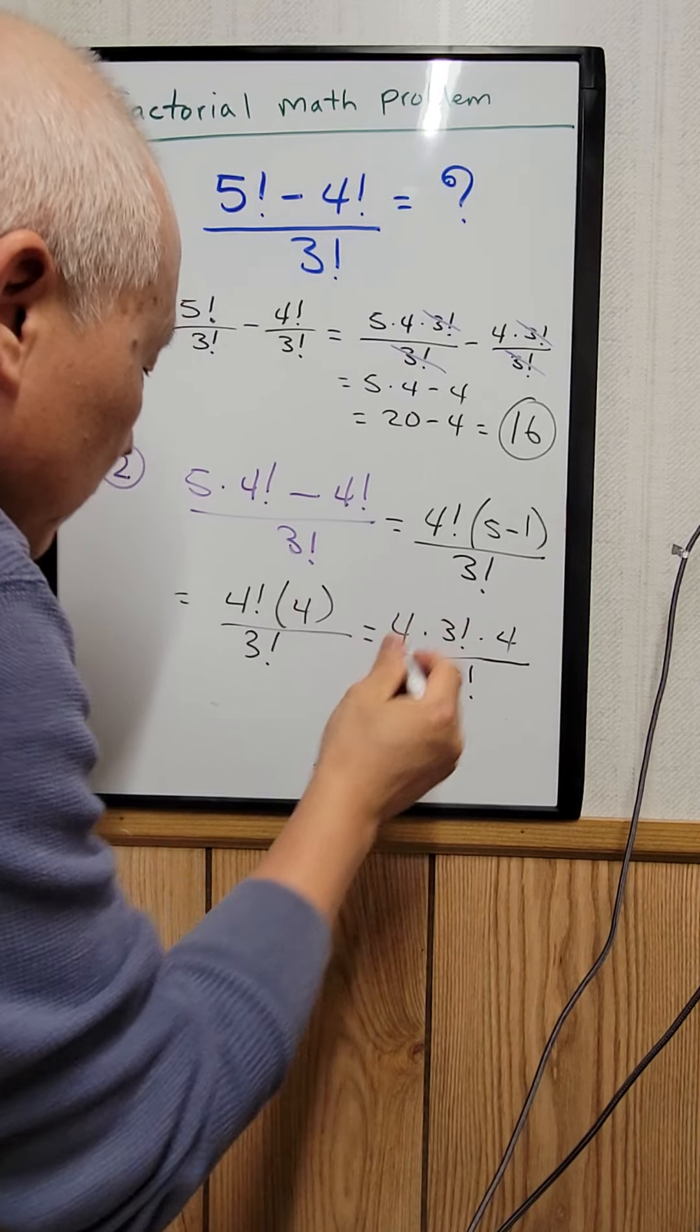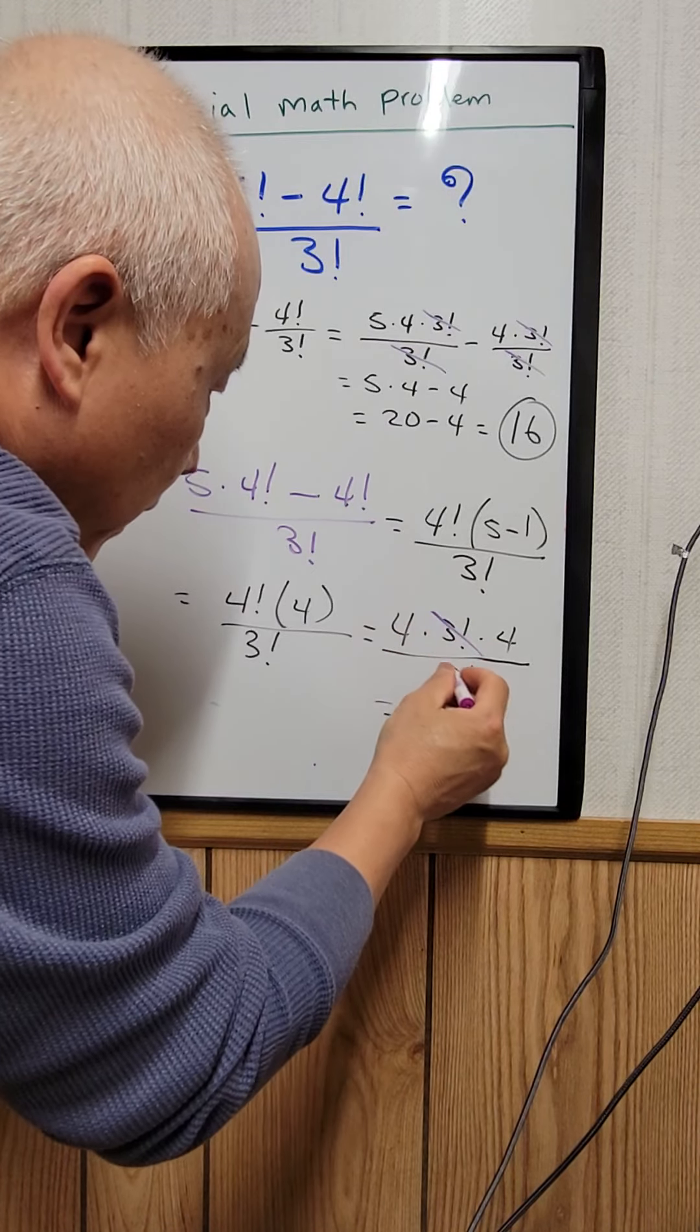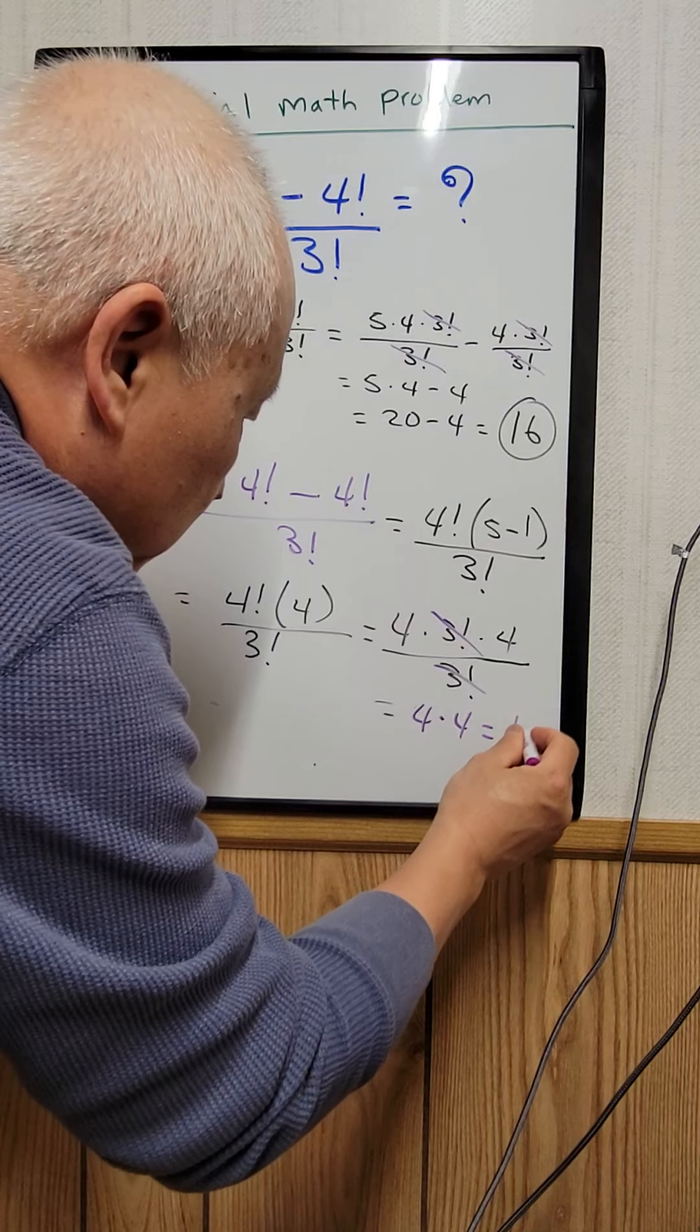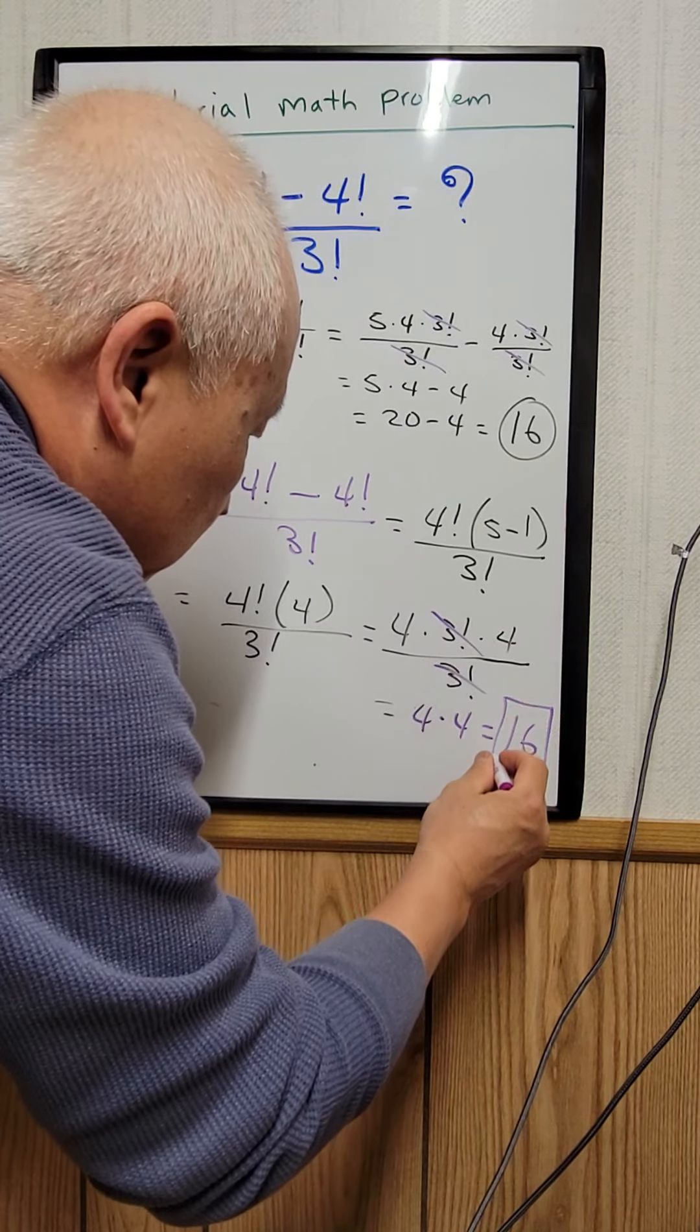The 3 factorial terms cancel out, leaving 4 times 4, which equals 16. So we get the same answer.